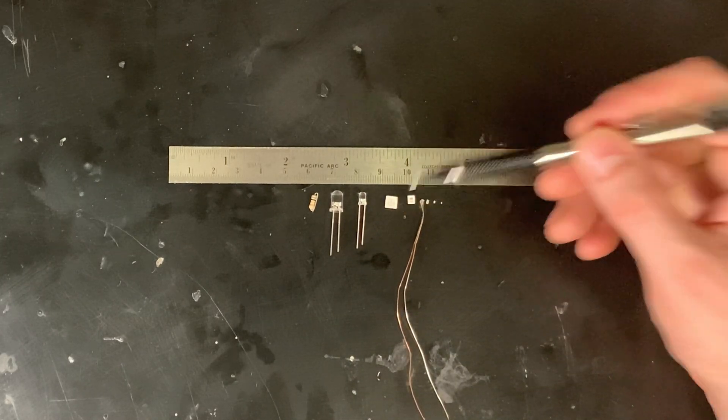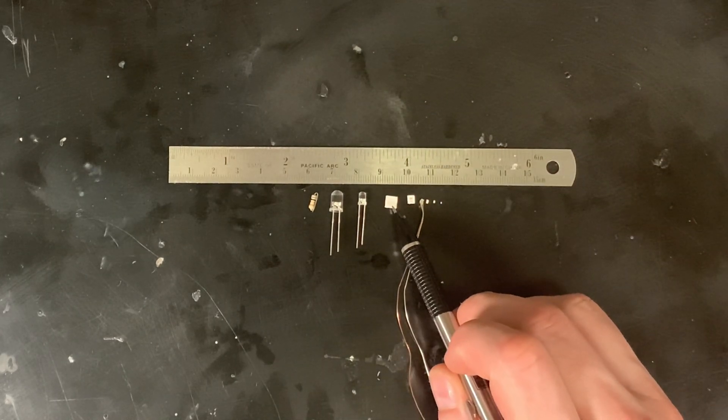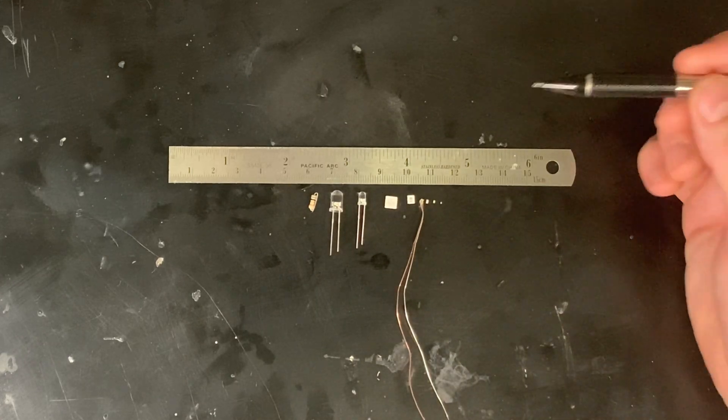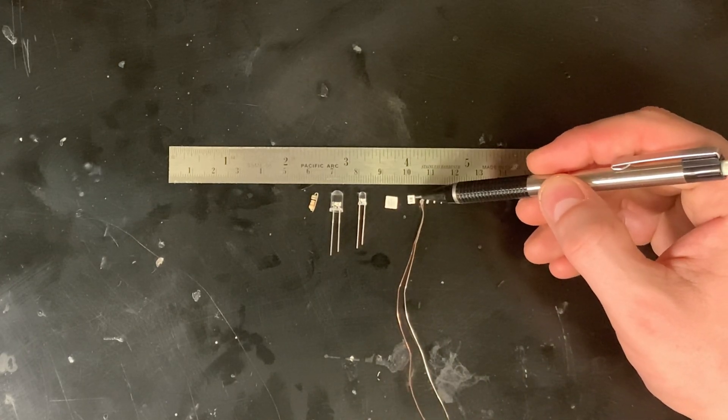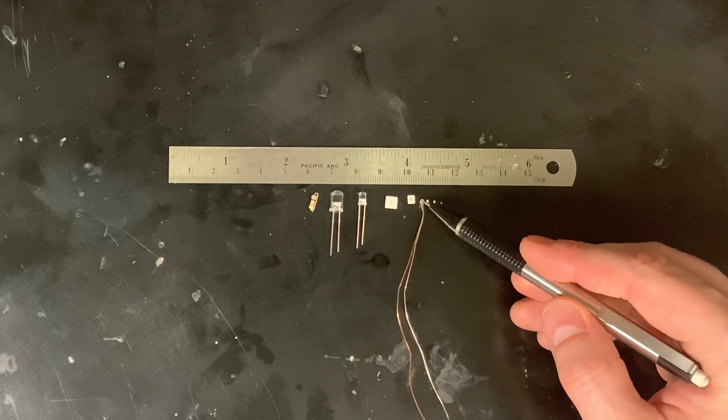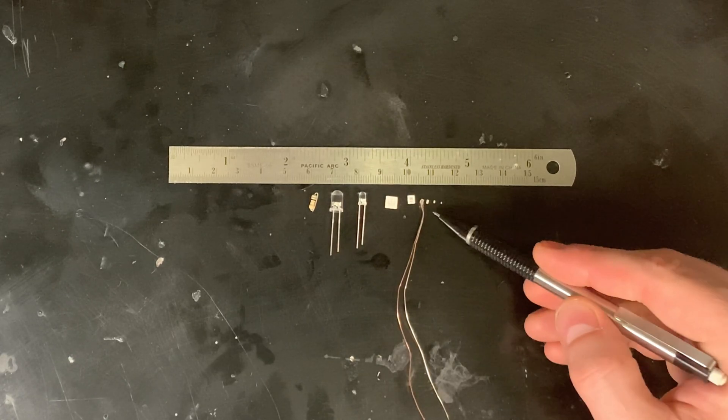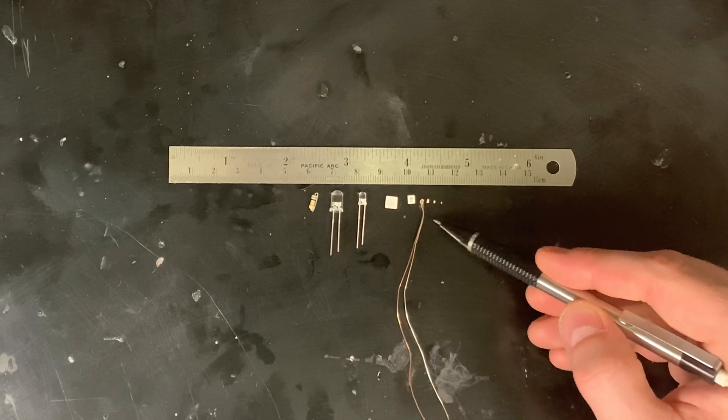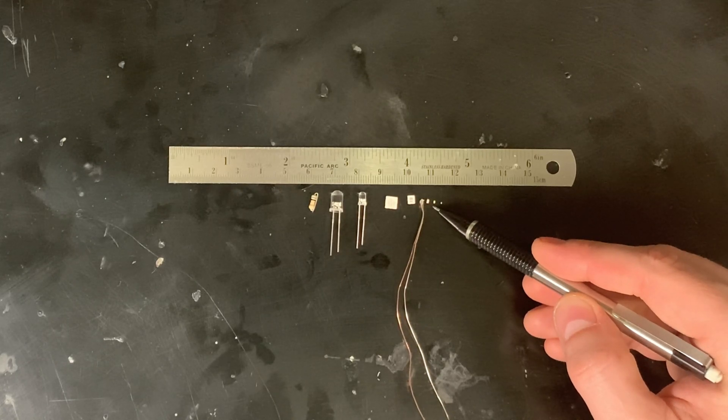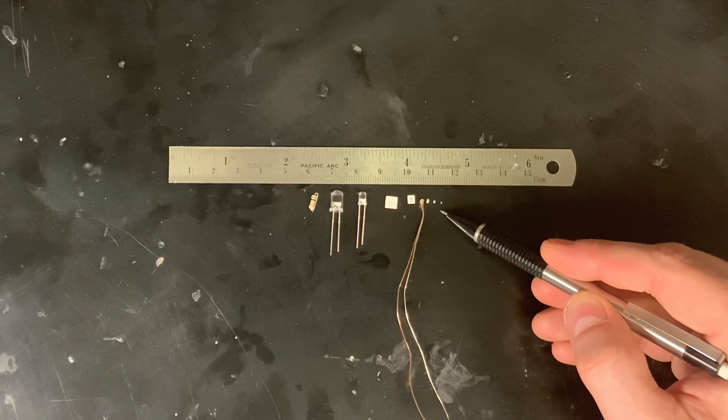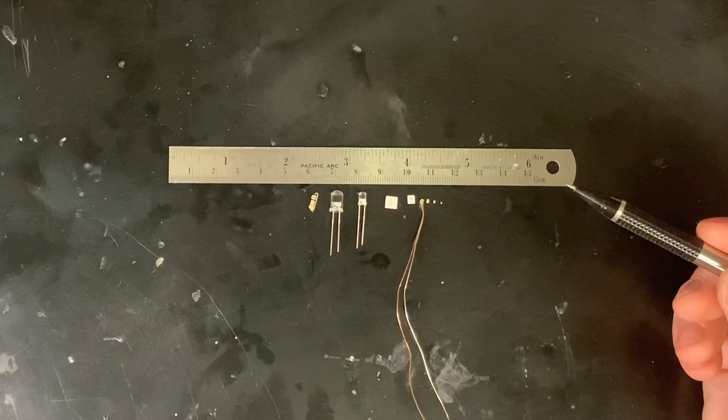a 5050 surface mount device with red, green, and blue, a 2835 surface mount, an 0603 pre-wired, 0603 not pre-wired, 0402, and this is an 0201 like you saw in the opening.